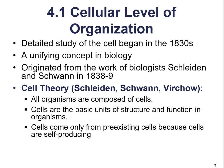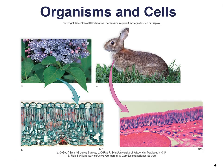Cell theory states: all organisms are composed of cells; cells are the basic units of structure and function in organisms; and cells come only from pre-existing cells because they are self-producing. This is a widely accepted, unifying concept of biology — it won't be disputed because there is so much evidence supporting it.